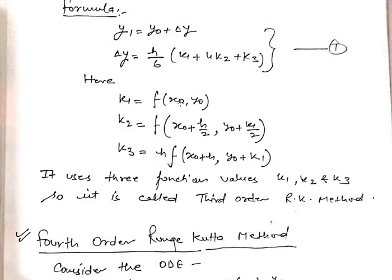For third order, K1 = H·f(x₀, y₀), K2 = H·f(x₀ + H/2, y₀ + K1/2), and K3 = H·f(x₀ + H, y₀ + K1). First calculate K1, K2, K3 using these formulas, then compute Δy, then get y₁ = y₀ + Δy. The same process repeats: y₂ = y₁ + Δy, y₃ = y₂ + Δy, continuing through successive approximations.